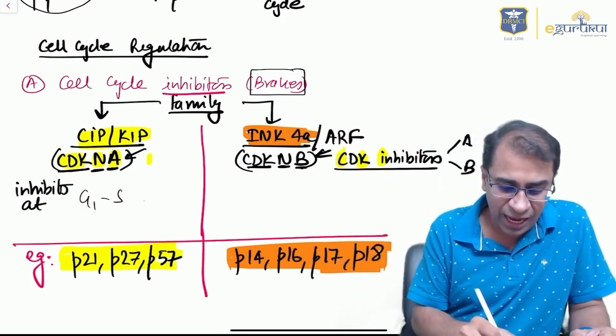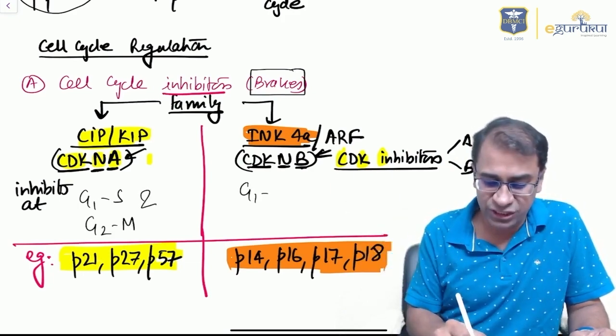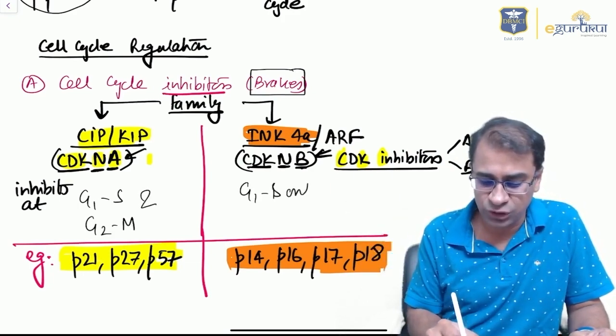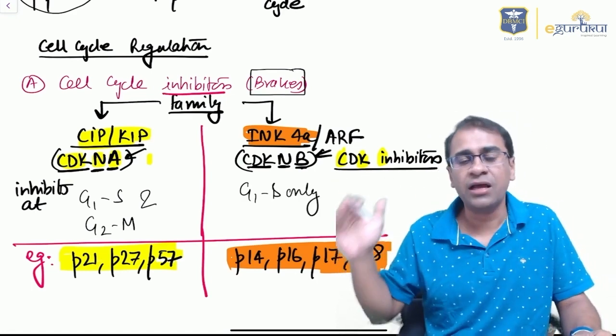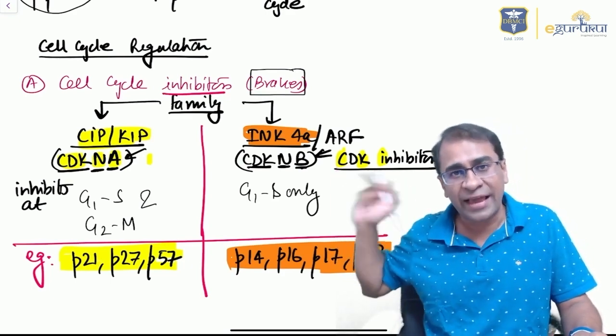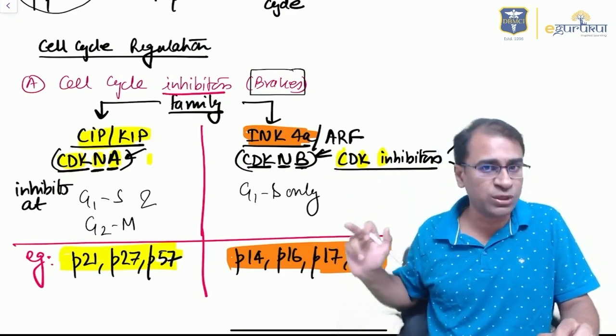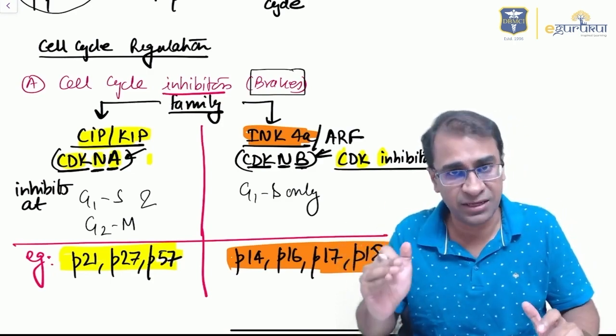Examples of CIP/KIP are p21, 27, 57. Examples of INK4 are p14 and p16, most importantly, but there are also 17 and 18. These are the cell cycle inhibitors.